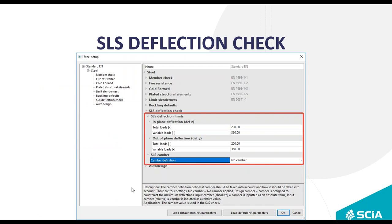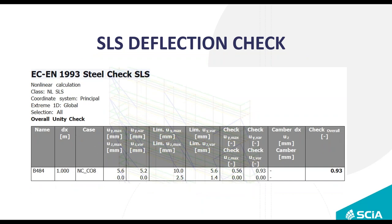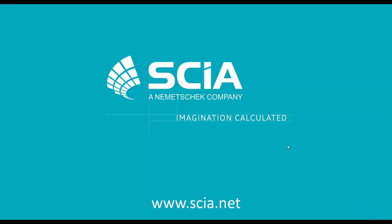For the SLS deflection check, newly adapted since CSE 19: you can now define in-plane and out-of-plane deflection limits. CSE automatically creates the necessary combinations in the background for total loads and variable loads separately. Results show the maximum deformation, the variable-load-only deformation, the limit values, and the verifications. It is also possible to define and design a camber, which the software takes into account in the SLS check.